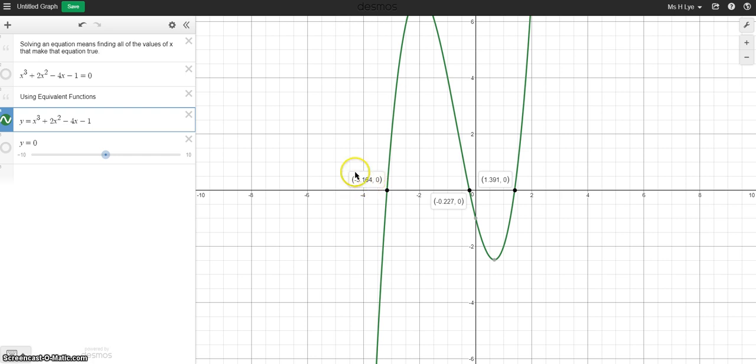Negative 3.164, and we'd have to note that that's approximate. We're going to assume that Desmos has rounded that answer, as well as negative 0.227 and 1.391. So three solutions for this cubic where it equals zero.